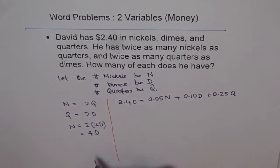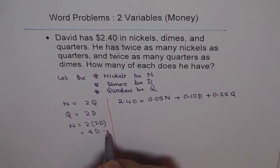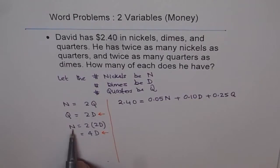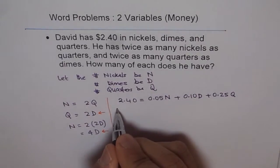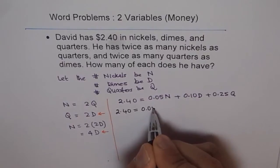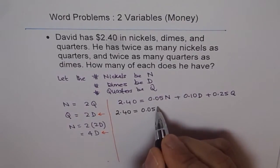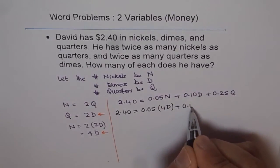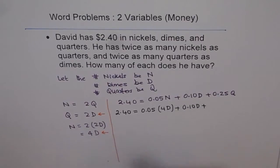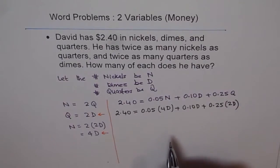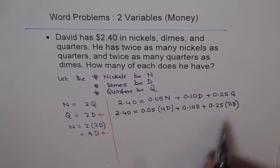So we converted this. Quarters are twice the number of dimes, nickels are four times the number of dimes. So we'll use this in our equation. The equation becomes 2.40 equals 0.05 times 4D plus 0.10 times D plus 0.25 times 2D. So in this equation, we have only one variable, so we can solve it.